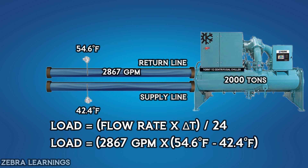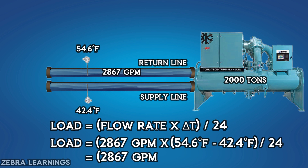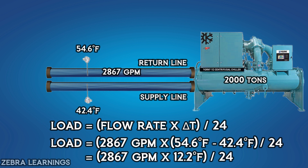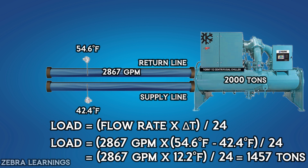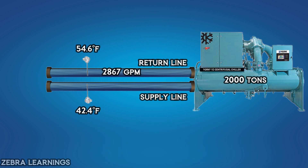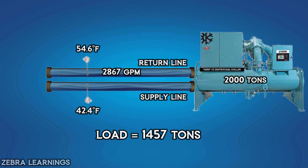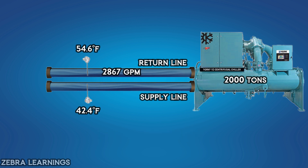Load equals 2,867 gallons per minute multiplied by (54.6°F minus 42.4°F), divided by 24, which equals 2,867 multiplied by 12.2, divided by 24, which equals 1,457 tons. The 2,000-ton chiller is currently running at 1,457 tons load, meaning it is removing heat equivalent to 1,457 tons from the water. This is the chiller load calculation method.